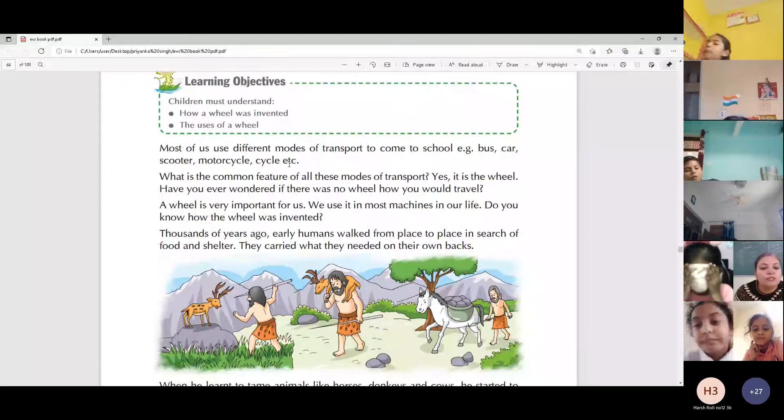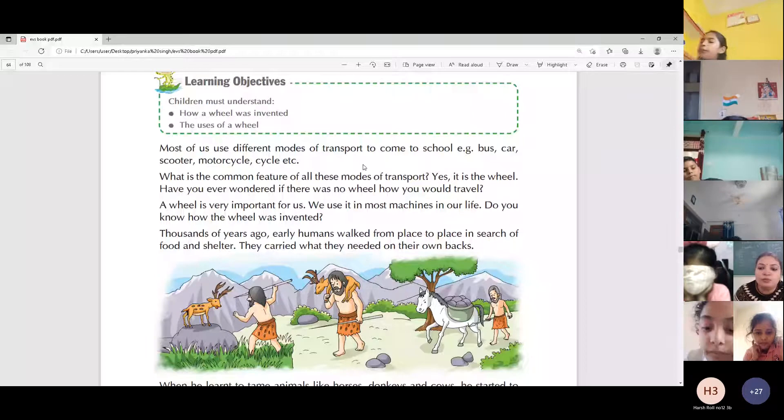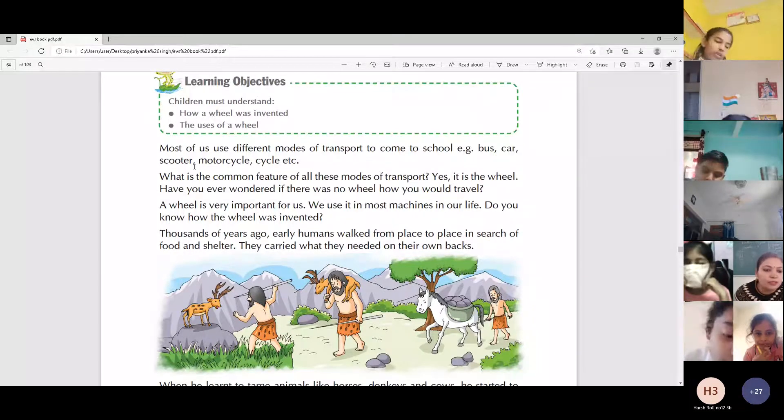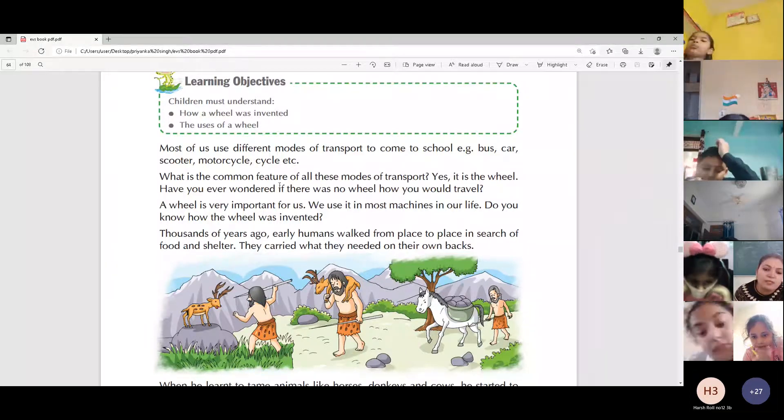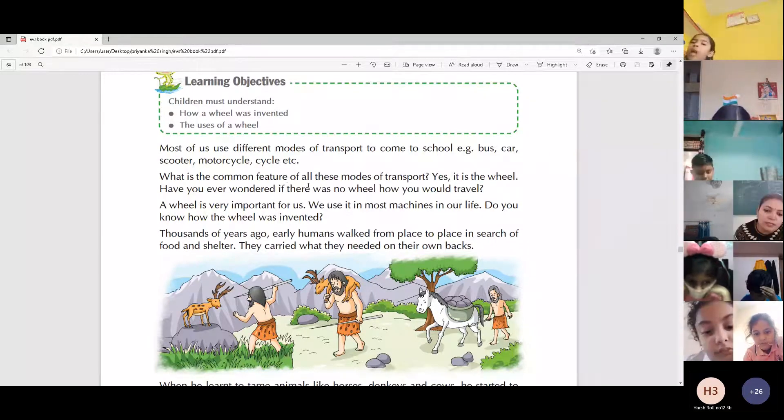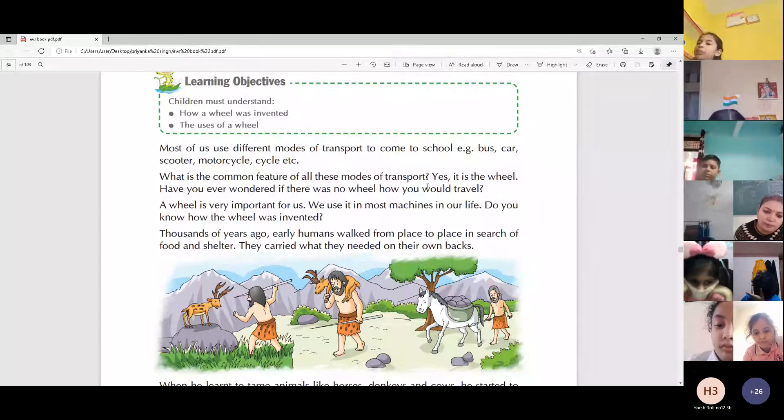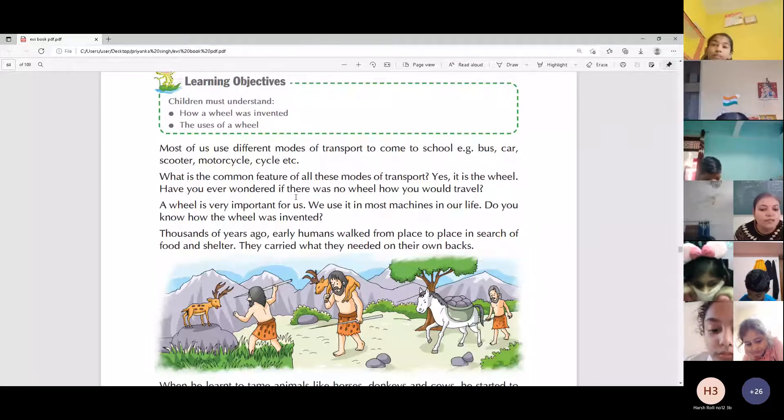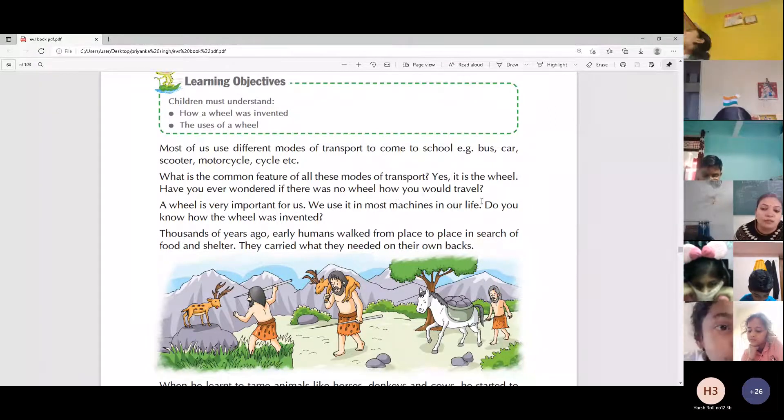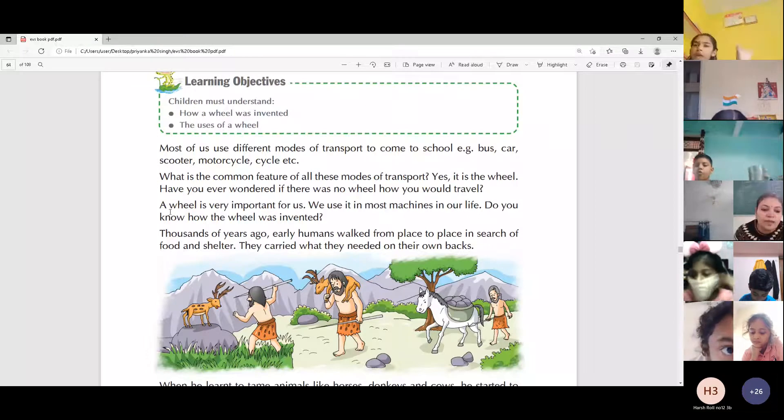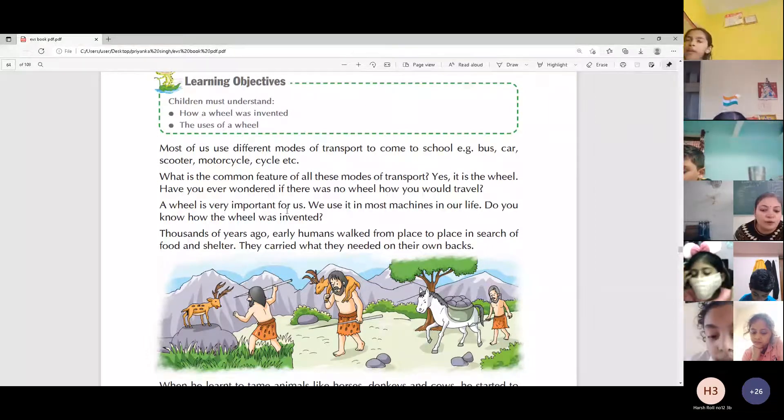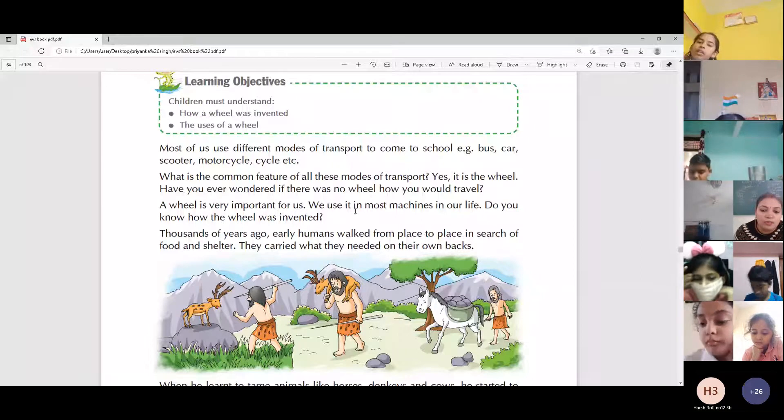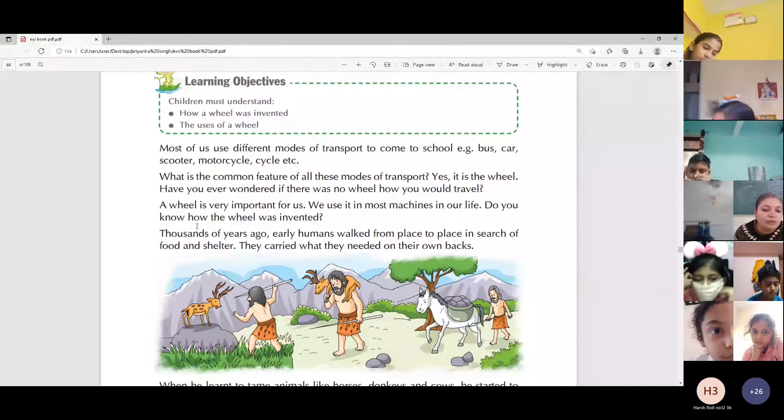Most of us use different modes of transport to come to school, like bus, car, scooter, motorcycle, cycle, etc. What is the common feature of all these modes of transport? Yes, it is the wheel. Have you ever wondered if there was no wheel, how you would travel? A wheel is very important for us. We use it in most machines in our life. Do you know how the wheel was invented?